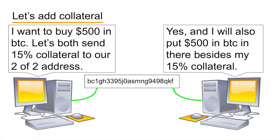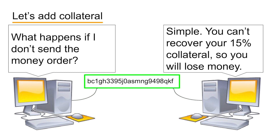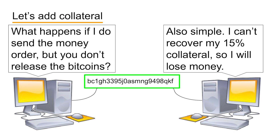So we still need to do something to prevent Bob from cheating. The next tool that BISC uses, strictly using the functions built into Bitcoin's Script, is collateral. Instead of depositing only the Bitcoins you're buying into the 2-of-2 address, Bob also deposits 15% additional money as collateral. And you, as the buyer, deposit 15% too. That way, if either of you cheats, you both are likely to lose money. The basic idea is that if Bob puts an extra 15% into the trade and then doesn't send you your Bitcoins, he can't get his collateral back without your cooperation. He may have cashed your $500 money order, but he's lost $500 in Bitcoin and an additional 15% on top of that in the form of his collateral.